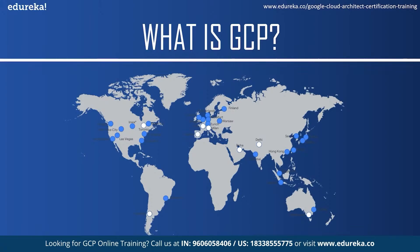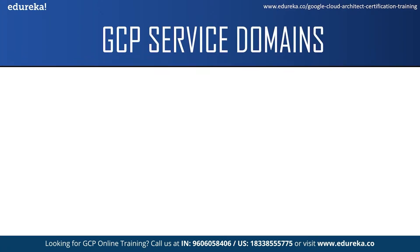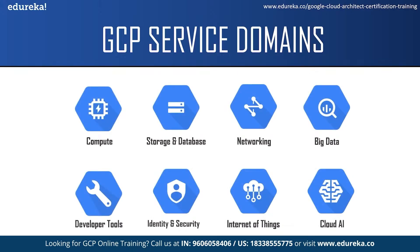A region is a specific geographical location where you can host your resources, and a region can have three or more zones. Google Cloud Platform provides various services in different domains. First is Cloud Compute Engine, where we can create instances of virtual machines on GCP. Second is Storage and Database — GCP offers highly durable, available, and scalable storage solutions for different types of data and access methods. Next is the Networking Service: GCP provides fast, reliable, and secure networking that scales based on user demands. Next is Big Data — GCP provides several services like Dataflow, Dataproc, and Datafusion to help you create a complete cloud-based big data infrastructure.